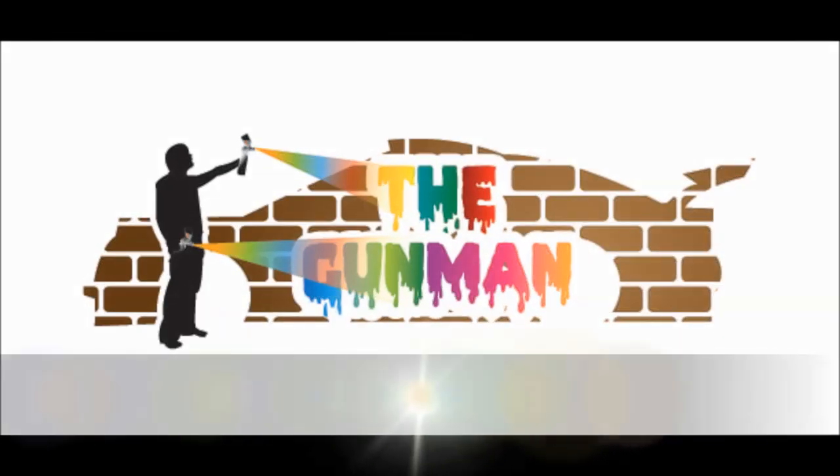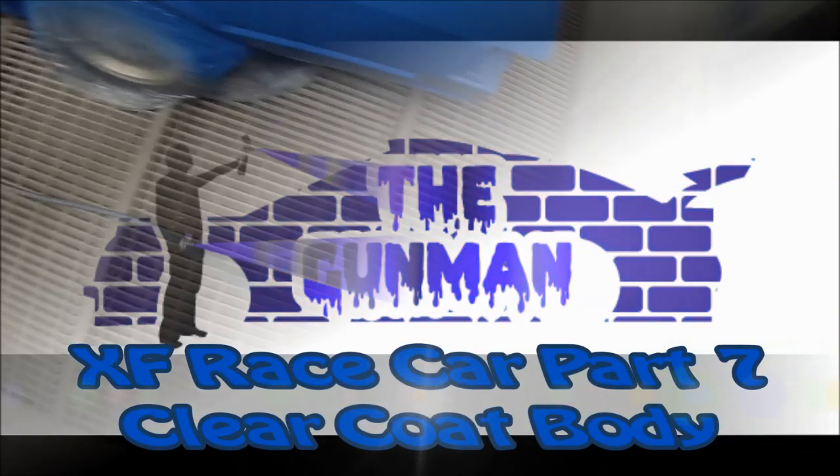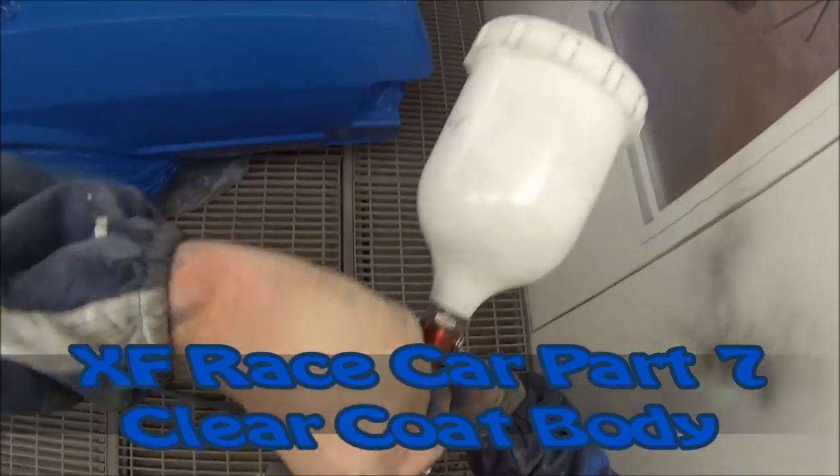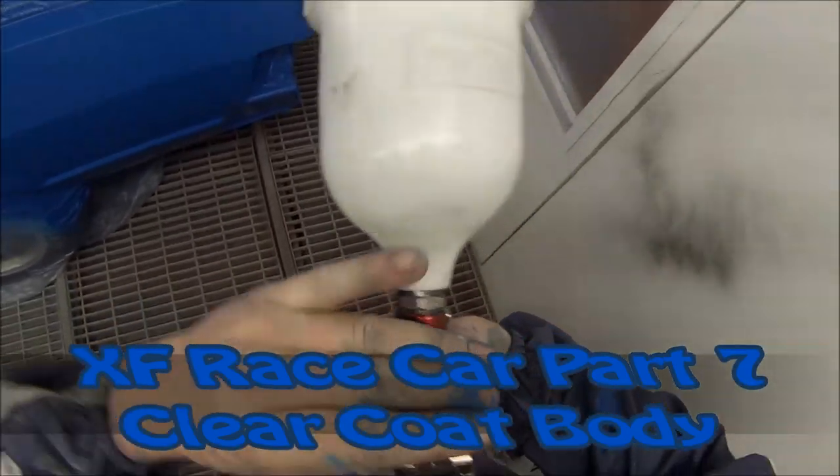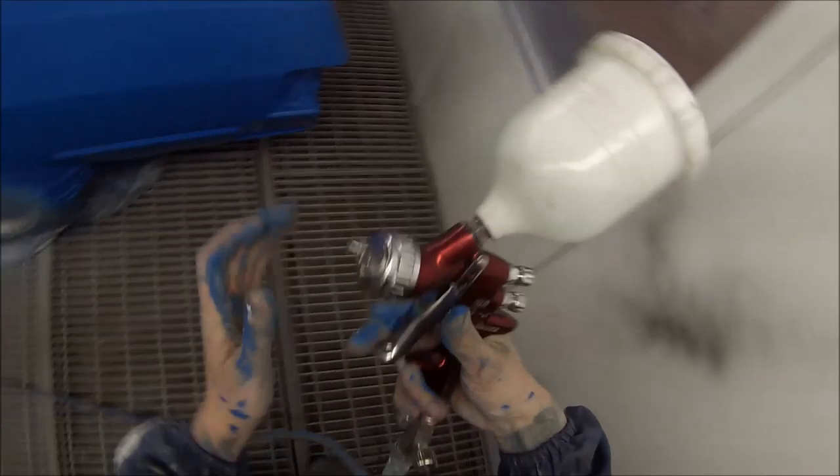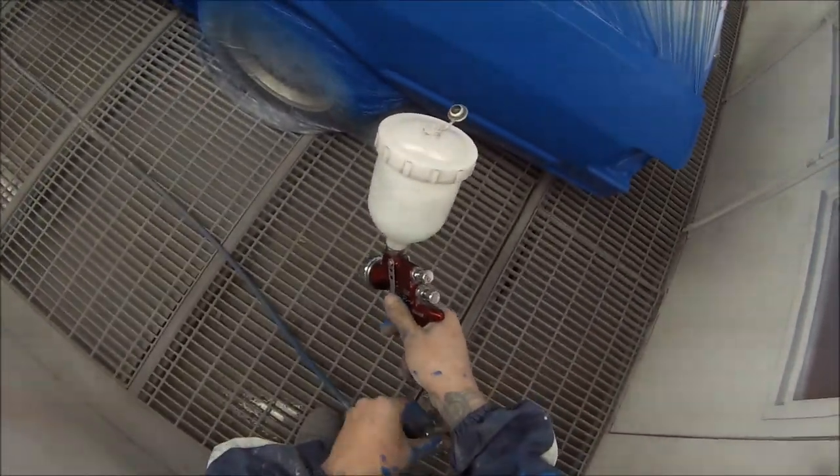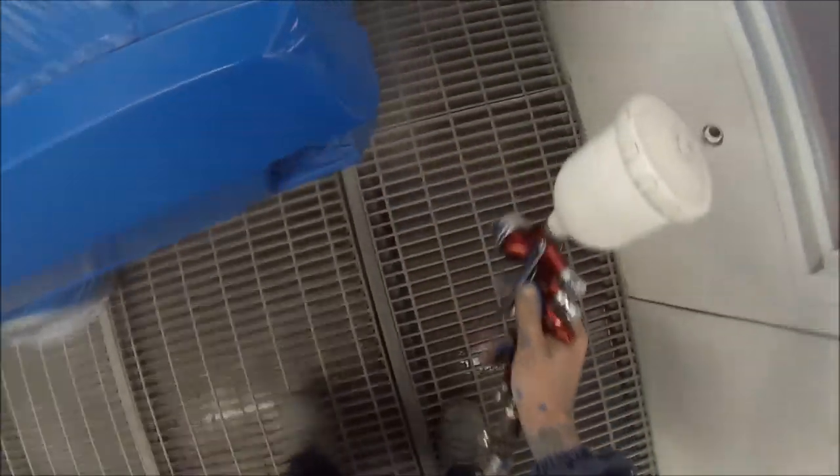Welcome to this episode of The Gunman. This is part 7 on the transformation of my XF Falcon into a replica race car. I did it up to look like the Peter Jackson Racing EB Falcon and the livery was also used on the Ford Sierra Cosworths of the early 90s.